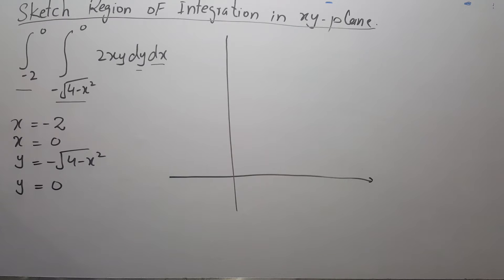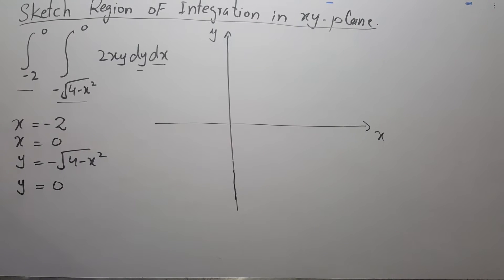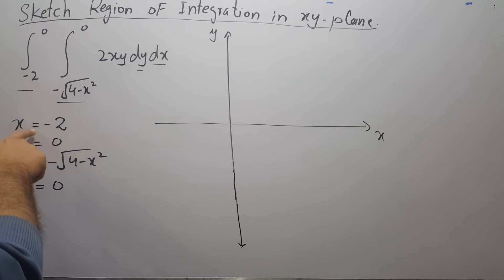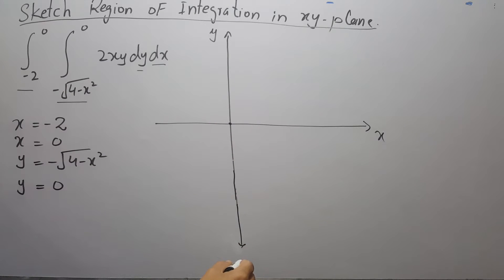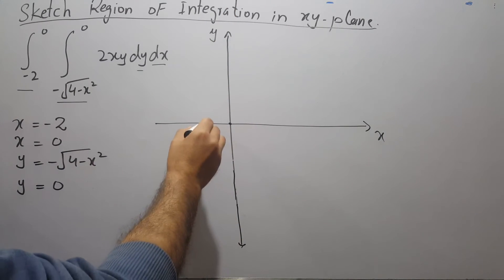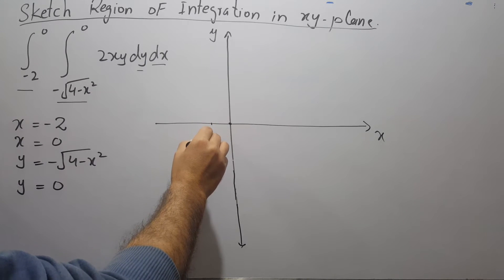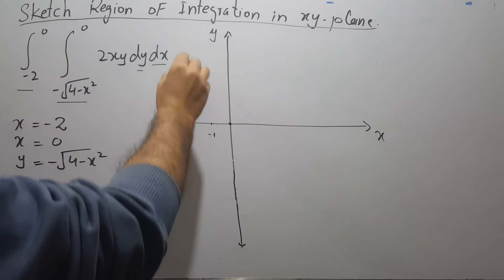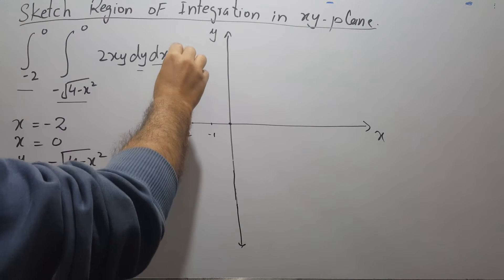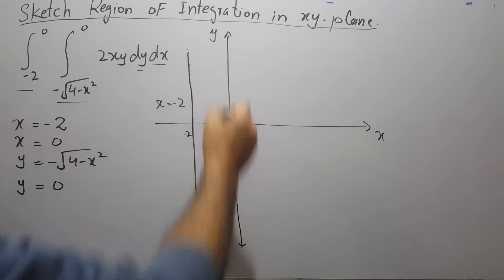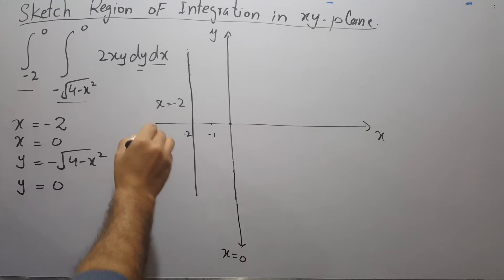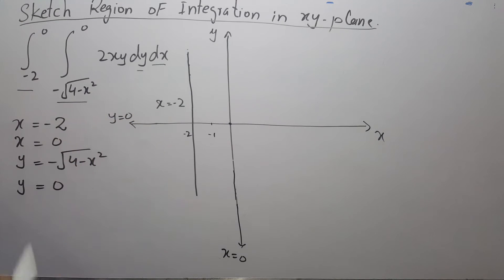This means we have to sketch the graph below — the negative side of the Y axis. x = 0 means this whole vertical line; wherever you go on this line, x equals 0. Then x = -2 is this vertical line. y = 0 is this whole horizontal line.